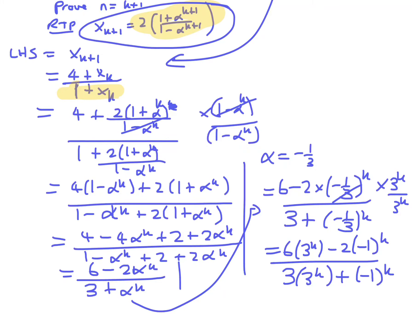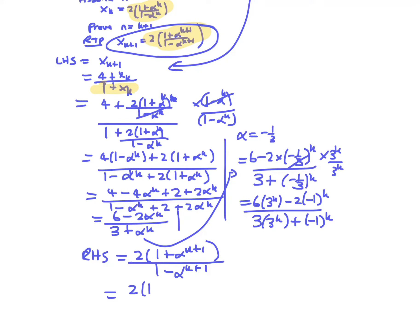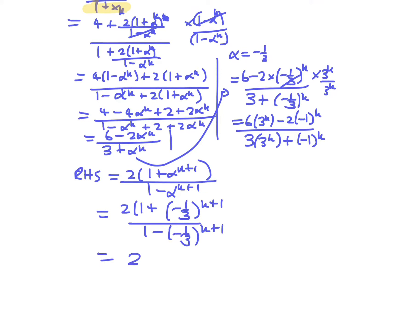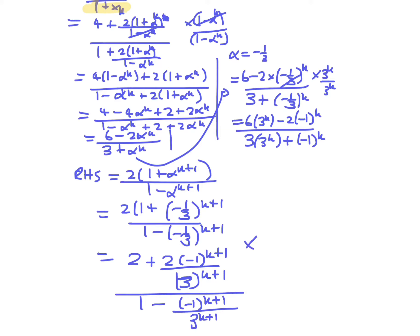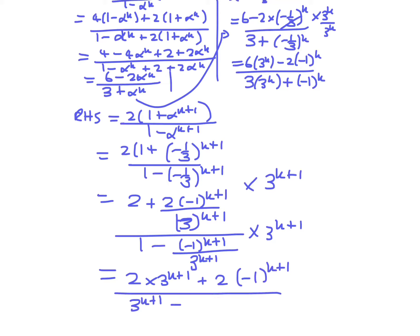So the right-hand side equals 2 times (1 plus alpha to the k plus 1) over (1 minus alpha to the k plus 1). That's going to be 2 times (1 plus (minus 1 third)^(k+1)) over (1 minus (minus 1 third)^(k+1)). Which gives us (2 plus 2 times (minus 1)^(k+1) over 3^(k+1)) over (1 minus (minus 1)^(k+1) over 3^(k+1)). If I multiply top and bottom by 3^(k+1), I get (2 times 3^(k+1) plus 2 times (minus 1)^(k+1)) over (3^(k+1) minus (minus 1)^(k+1)).